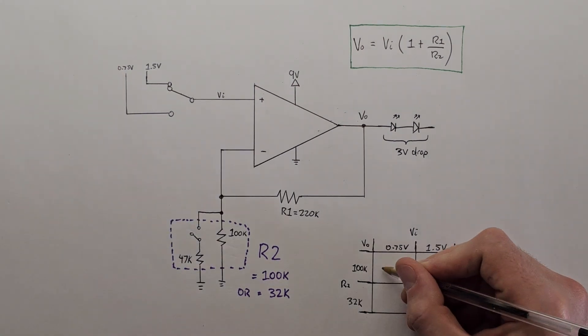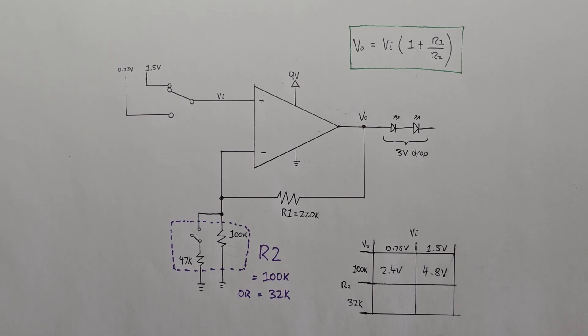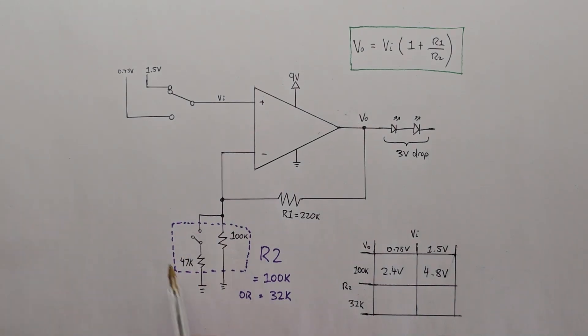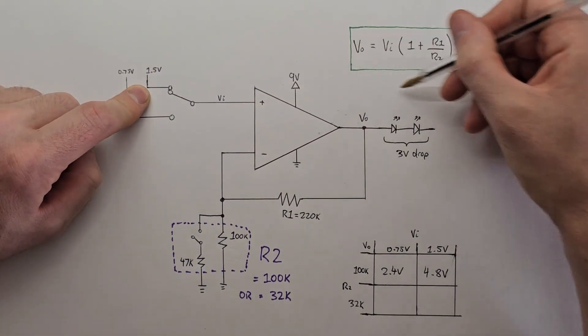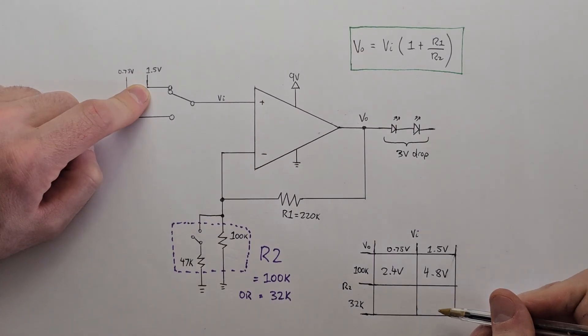If instead we close this switch to enable this resistor in circuit, then the effective parallel resistors become 32k, and let's say we give it 1.5 volts on the input. Then plugging them into the equation we get about 12 volts on the output. Now that's not quite going to work in this circuit because this op amp is powered by 9 volts, so it's actually going to hit 9 and max out, it won't go any higher than that.